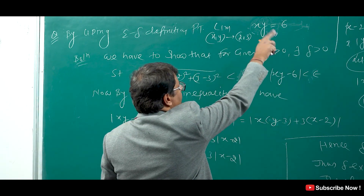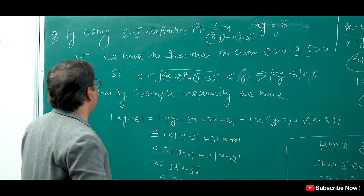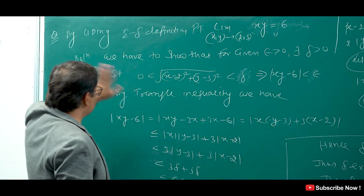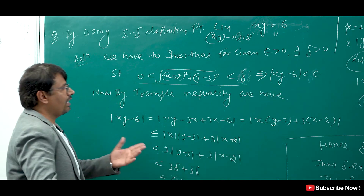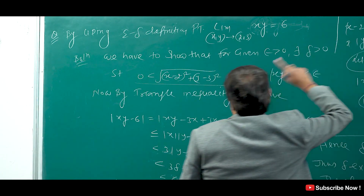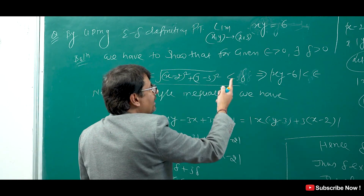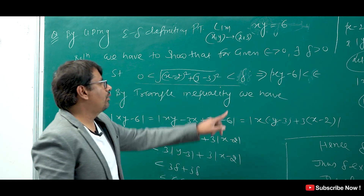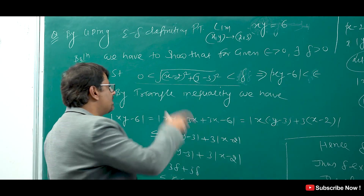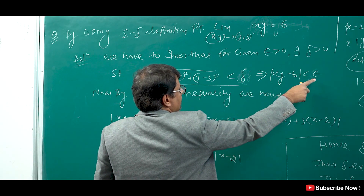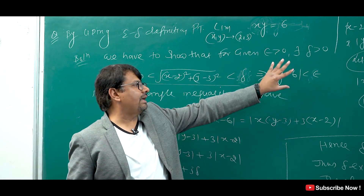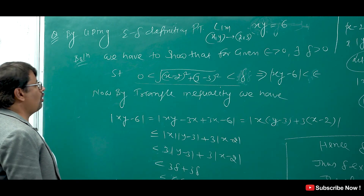The questions that come in exams are slightly different. I will do one more question on epsilon-delta definition in the next video, where I will show you different types of questions. We have to show that given epsilon greater than 0, there exists a delta greater than 0 such that — and by triangle inequality, student, we are going to apply the triangle inequality.